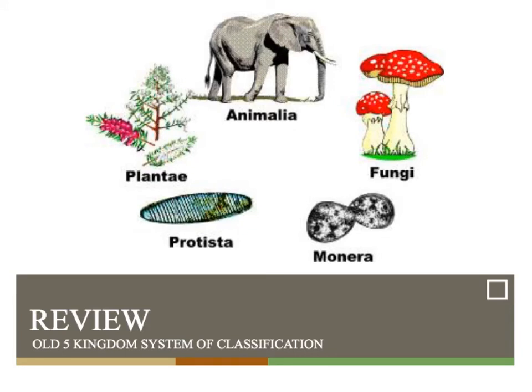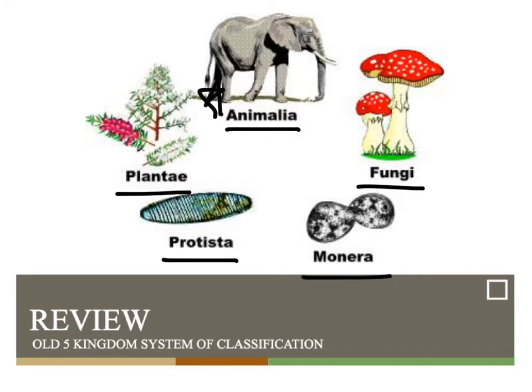This is the old system of classification. We used five kingdoms: animal kingdom, plants, protists, monera, and fungi. This is outdated. We still have the animal kingdom, the plant kingdom, the protists, and the fungi.